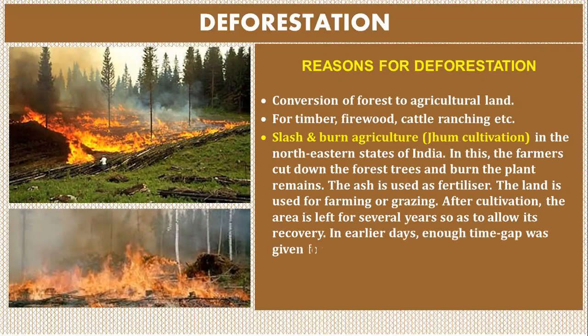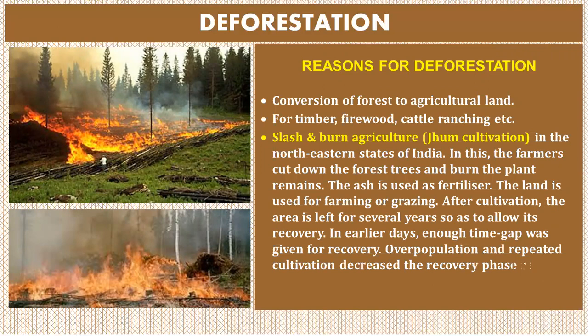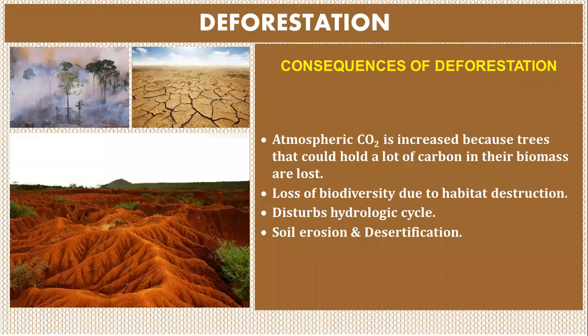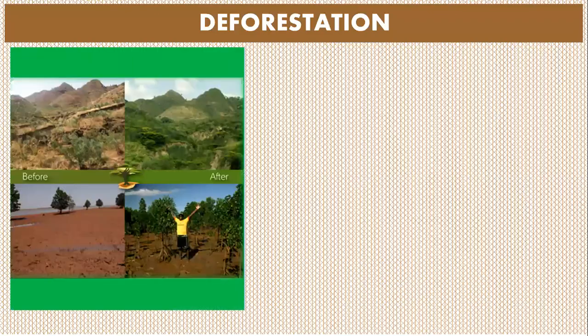After cultivation, the area is left for several years to allow recovery. In earlier days, enough time was given for recovery, but overpopulation and repeated cultivation decreased the recovery phase, resulting in deforestation. Consequences of deforestation include: increased atmospheric carbon dioxide as trees that stored carbon in their biomass are lost, loss of biodiversity due to habitat destruction, disruption of hydrologic cycles, soil erosion, and desertification.